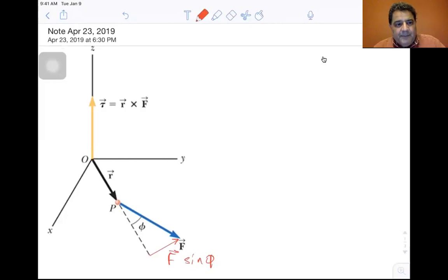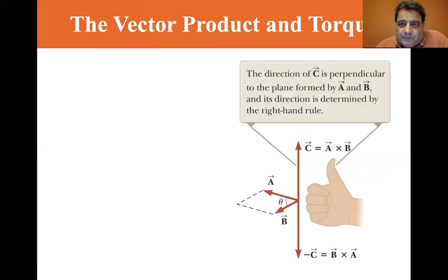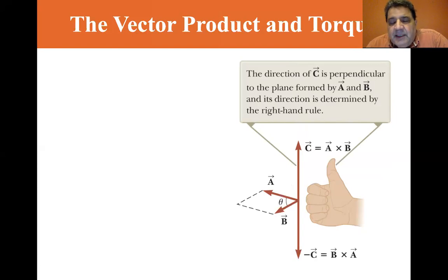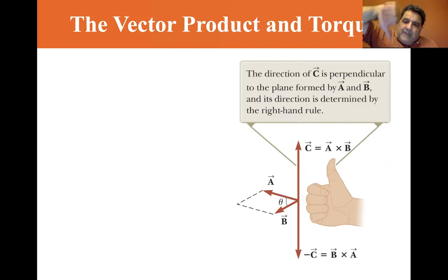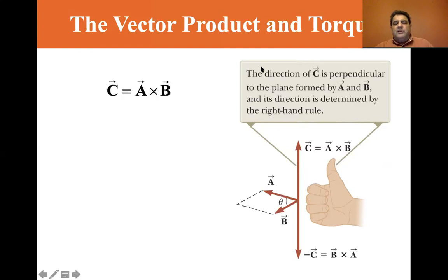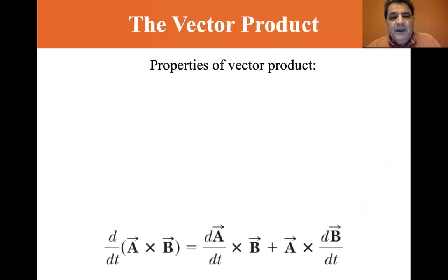Let's go back to our discussion of the cross product, or vector product. Whenever you have two vectors, the vector product or cross product is found as shown. The direction of C is perpendicular to the plane formed by A and B, and its direction is determined by the right-hand rule. If you cross A into B, then C is in that direction. If you cross B into A, C is in the opposite direction — that's minus C. So C equals A cross B, and the magnitude is AB sin θ.